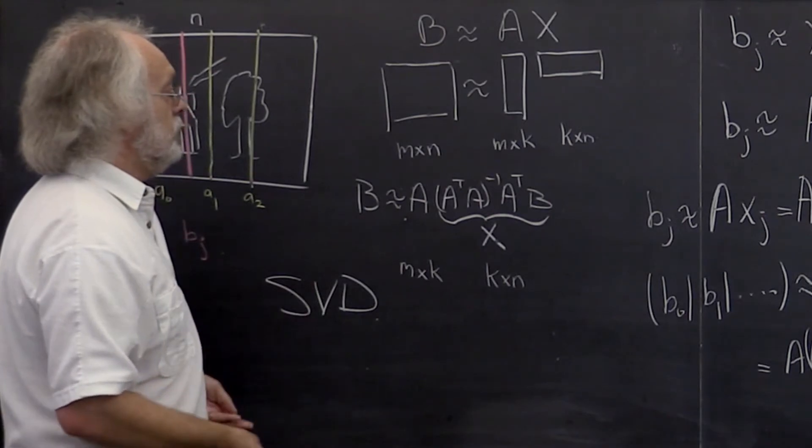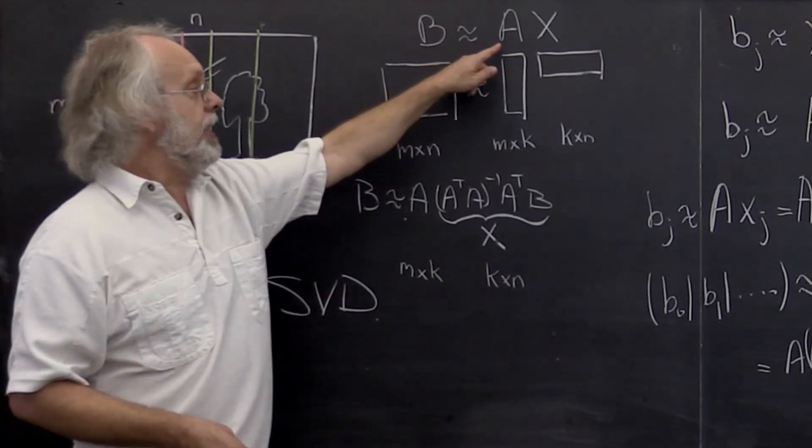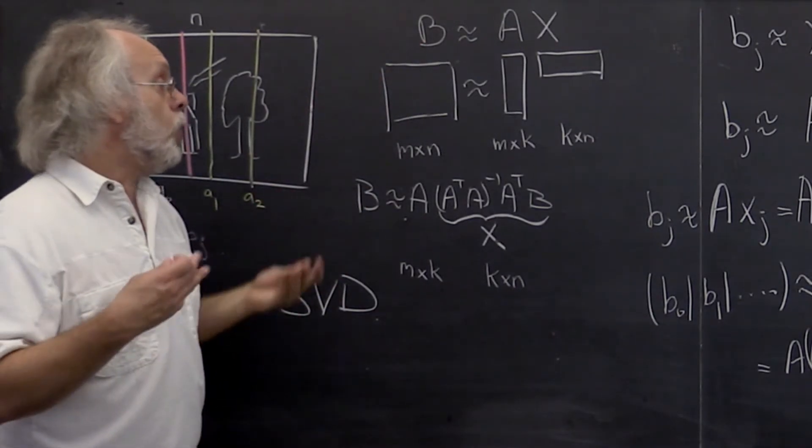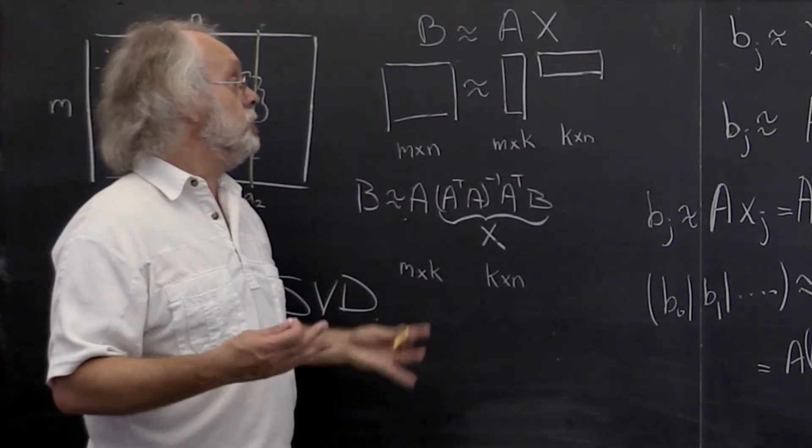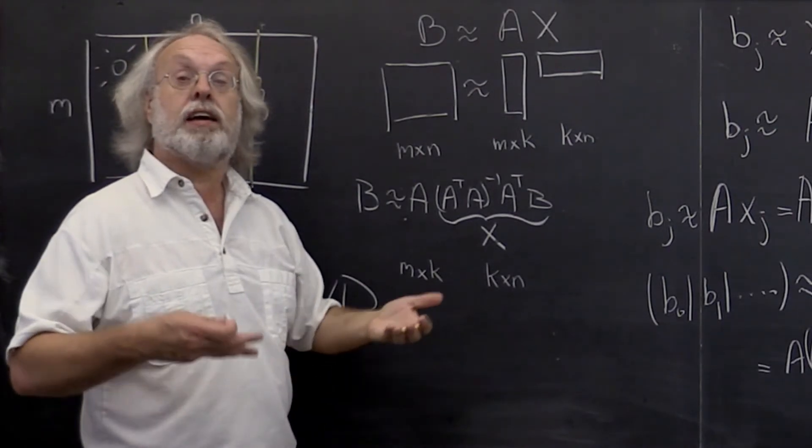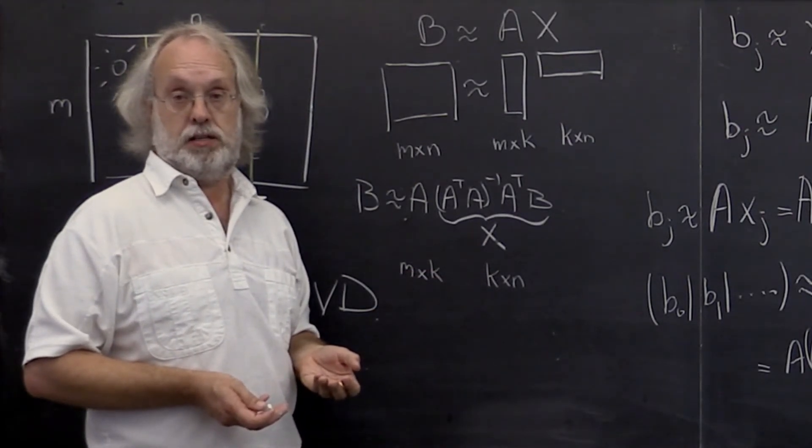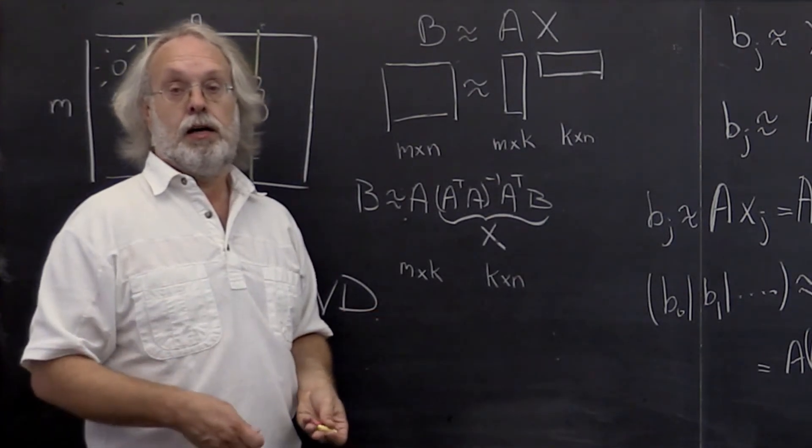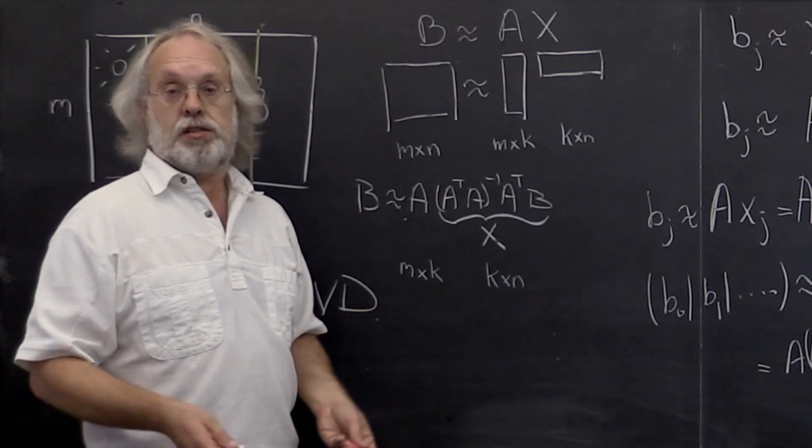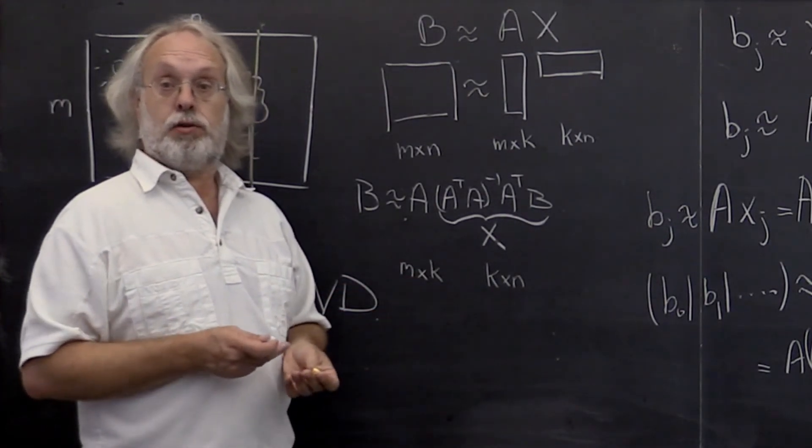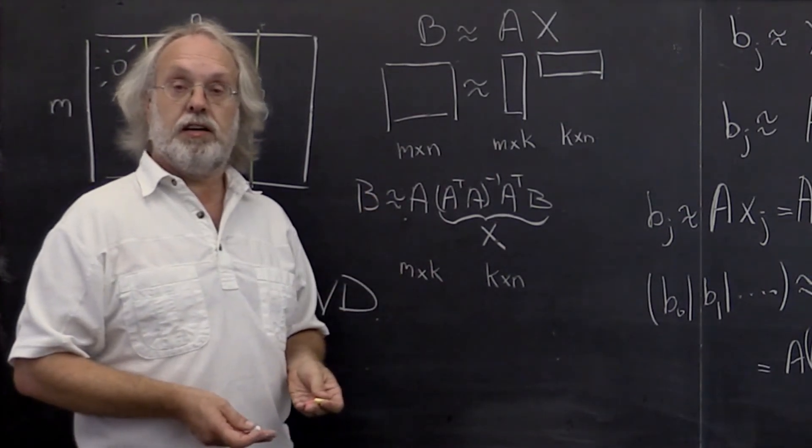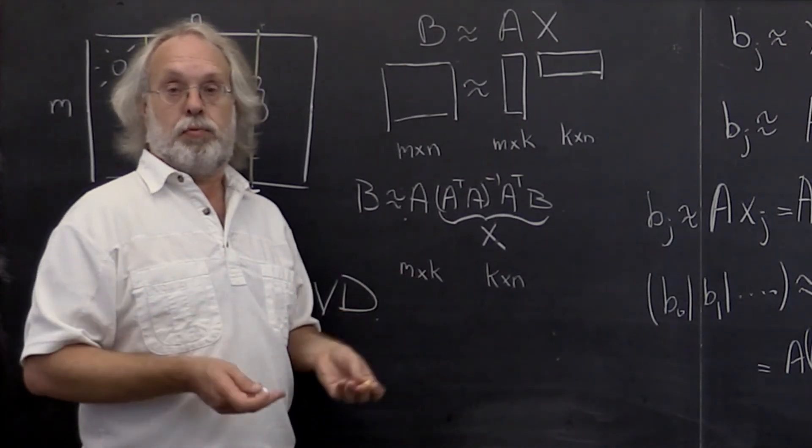Singular value decomposition allows you to find the optimal A and X for this approximation. It allows you to quantify how many columns you really should make part of your matrix A, what the K should be in that rank K approximation. Now before we can get there, we need to revisit orthogonal vectors, orthonormal vectors, something called unitary matrices. And once we have all of that apparatus, then we can introduce the singular value decomposition and the whole theory that supports it.